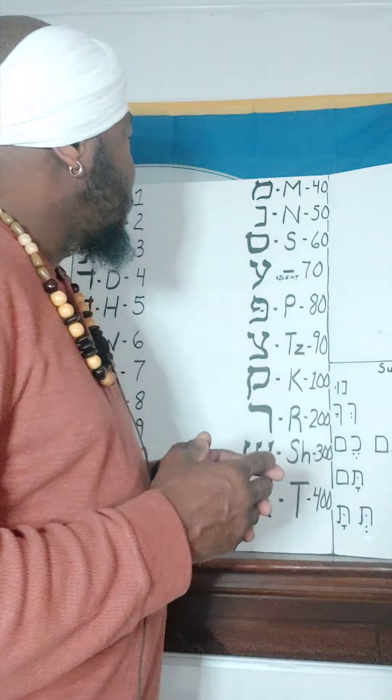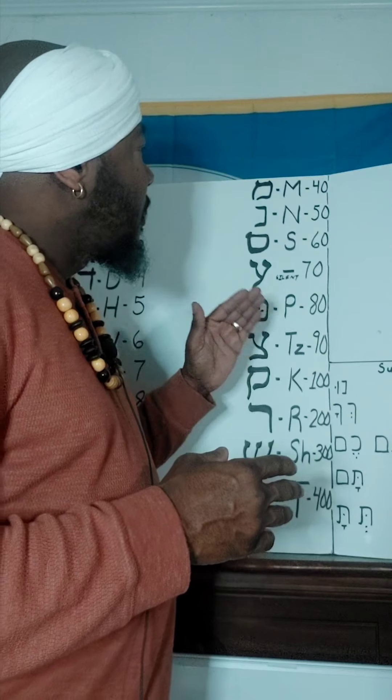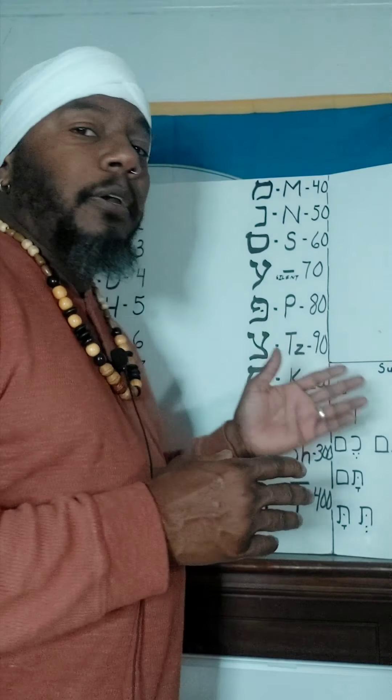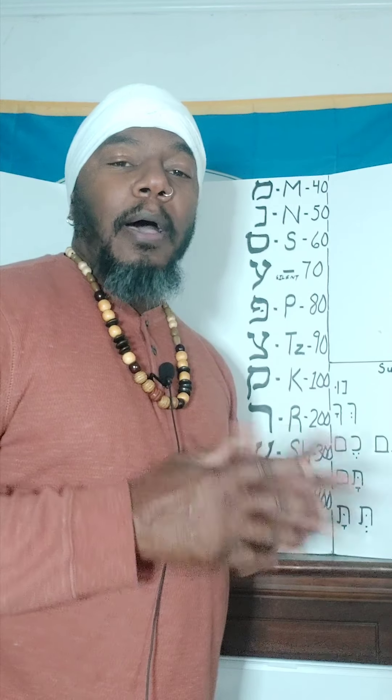So there you have it. That is the introduction to the twenty-two letters of the Hebrew Alephbet. The next time we will go over the Nikodot, or the vowel pointing system of the Hebrew. We will do a quick refresher of the Alephbet and then go into the Nikodot, the vowel pointing system. So until next time, shalom.